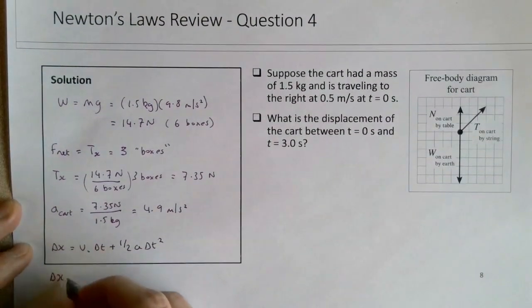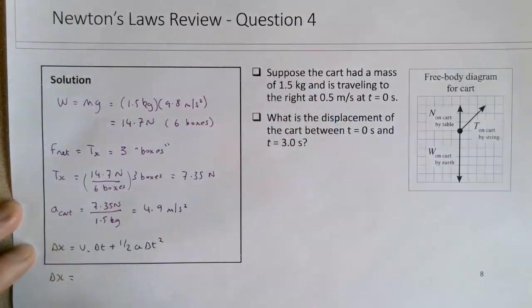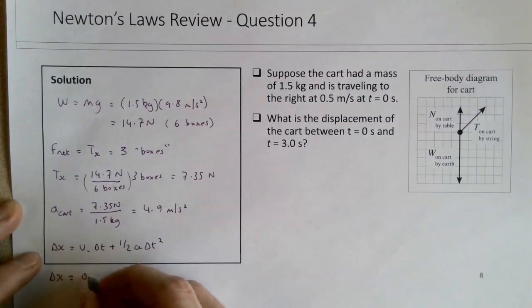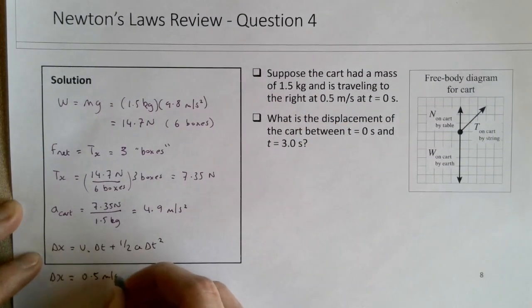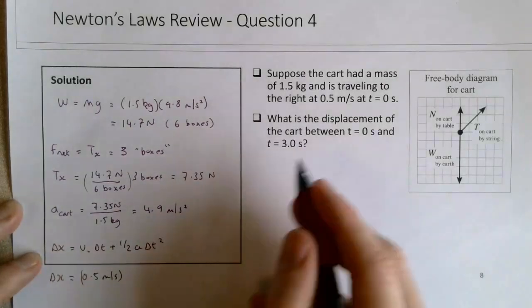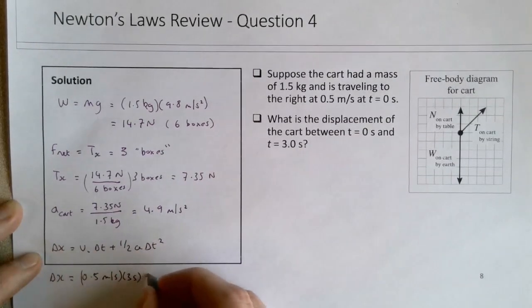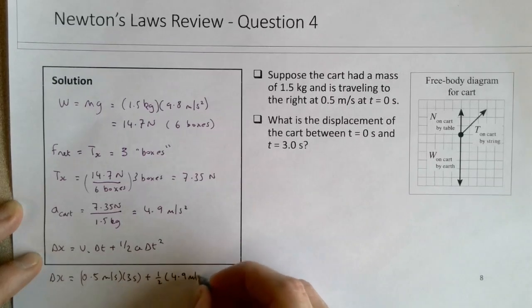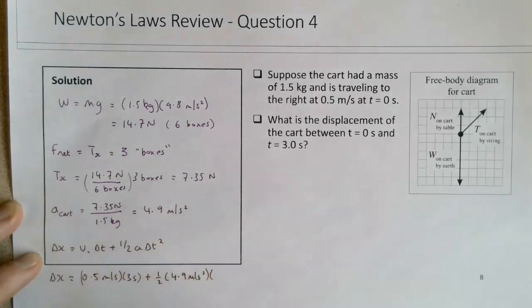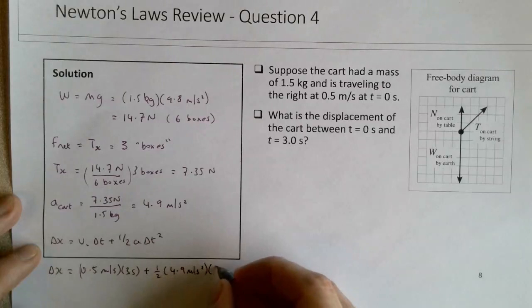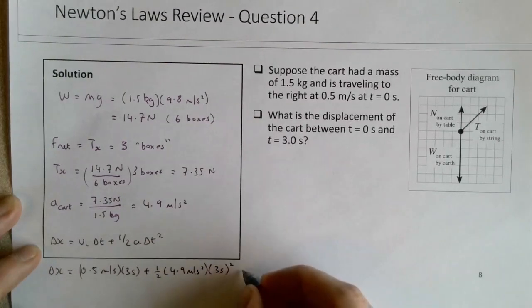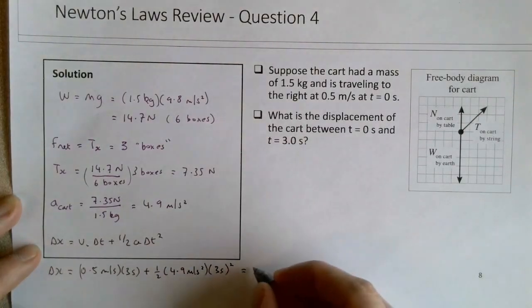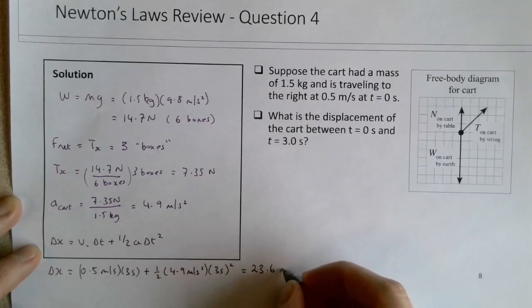So our delta x: we're told that its initial speed is to the right, that's 0.5 meters per second, the time interval is 3 seconds. We've done the hard work to figure out the acceleration, and again our time squared, and this gives us an answer of 23.6 meters.